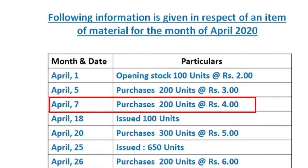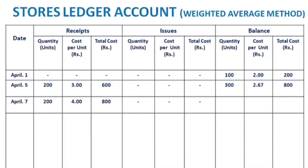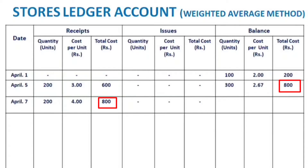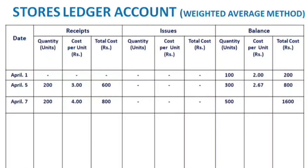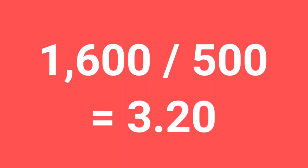For April 7th, there is a purchase of 200 units each at 4 rupees, totaling 800 rupees in receipts. The new balance quantity is 300 plus 200 equals 500 units, and the total cost is 800 plus 800 equals 1,600 rupees. The new cost per unit is 1,600 divided by 500.